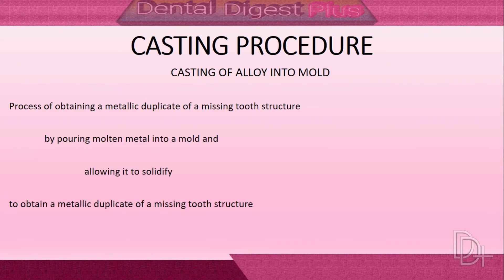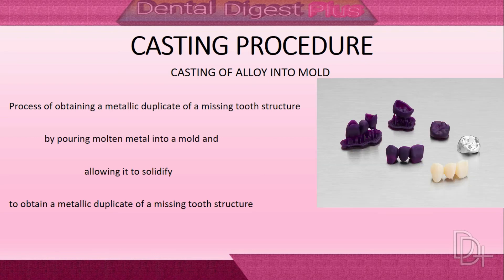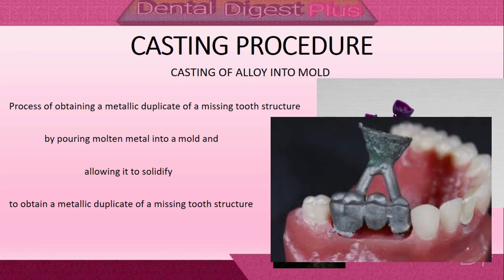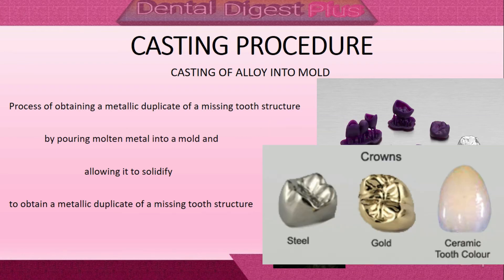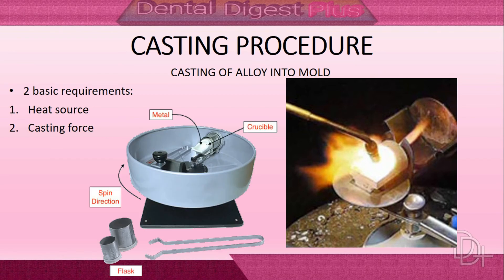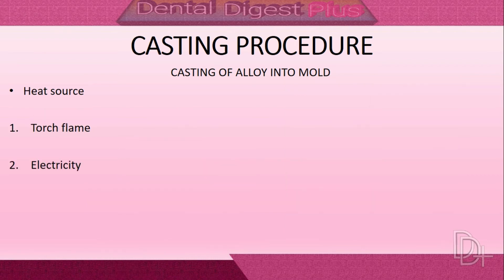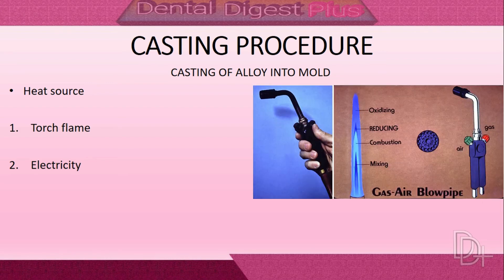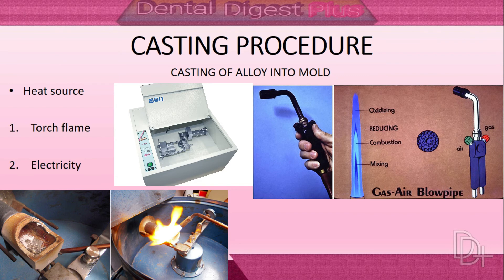The ninth step is casting — the process of obtaining a metallic duplicate of a missing tooth structure by pouring molten metal into a mold and allowing it to solidify. Two basic requirements are: a heat source to melt the alloy, and a casting force to push molten alloy into the mold. Heat sources include torch flame and electricity. Torch melting is used for low-temperature metals and electric melting for higher-temperature metals.